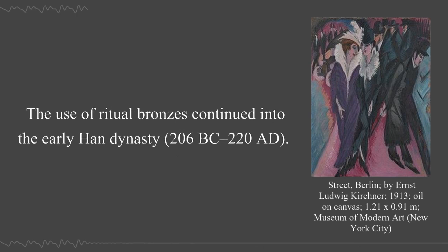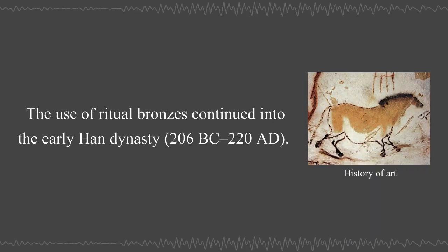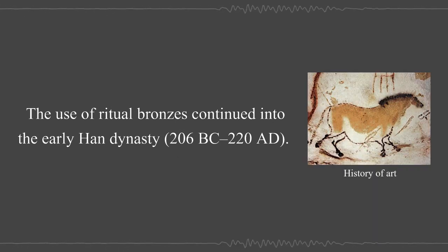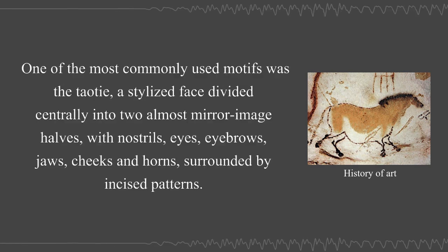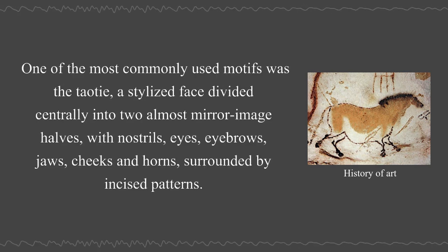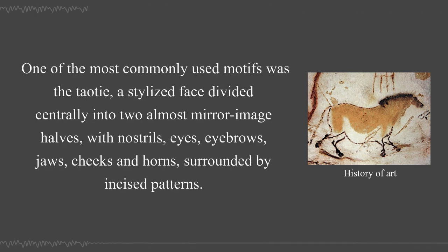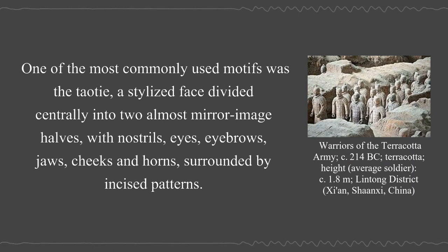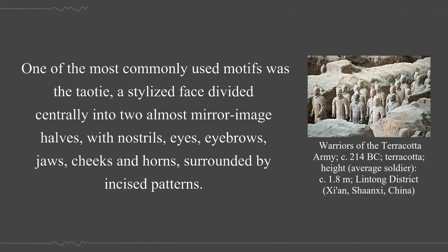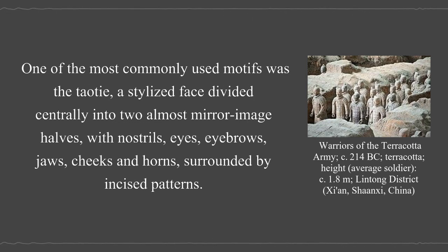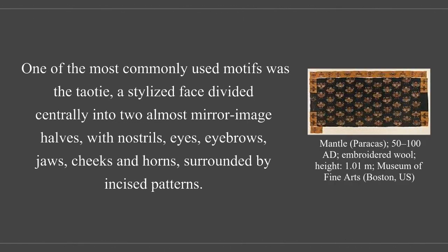The use of ritual bronzes continued into the early Han dynasty, 206 BC–220 AD. One of the most commonly used motifs was the Taotie, a stylized face divided centrally into two almost mirror image halves, with nostrils, eyes, eyebrows, jaws, cheeks, and horns surrounded by incised patterns.